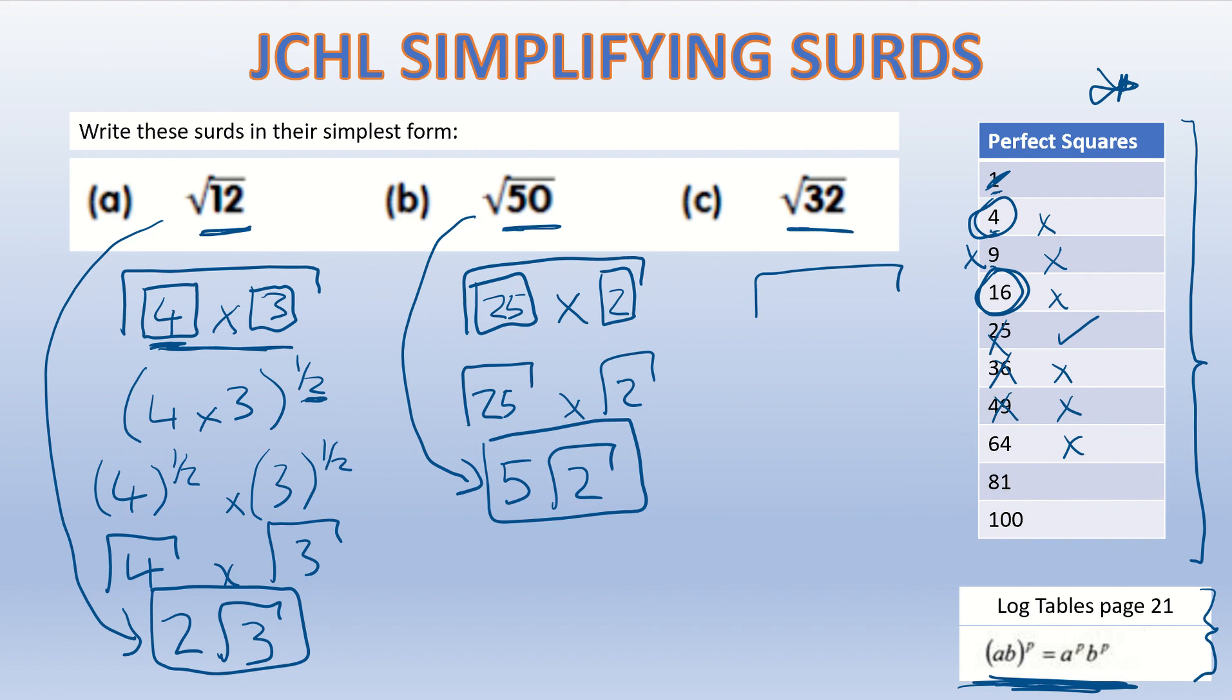So just be careful, the main thing here with 32 is that 4 will go into 32 but it's not the biggest perfect square that goes in. So my 32 I'm going to split up into 16 times 2. That's going to split up into root 16 times root 2 because of what we've done previously. We all know that root 16 is 4, so 4 root 2.